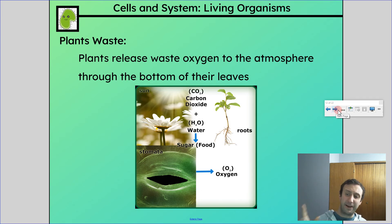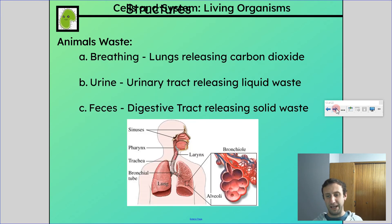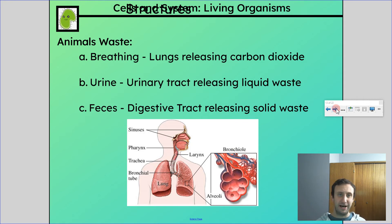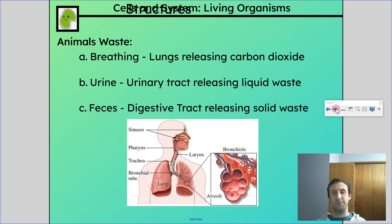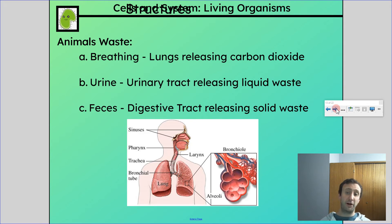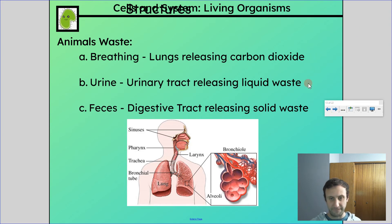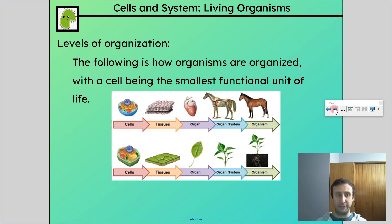Plants and animals have different structures to suit their needs. For animal waste: we breathe out carbon dioxide. We produce urine to get rid of our liquid waste — there's a lot of nitrogen waste in there in our urea, which is the main chemical compound in urine. And feces is where our solid waste gets released from our digestive tract.